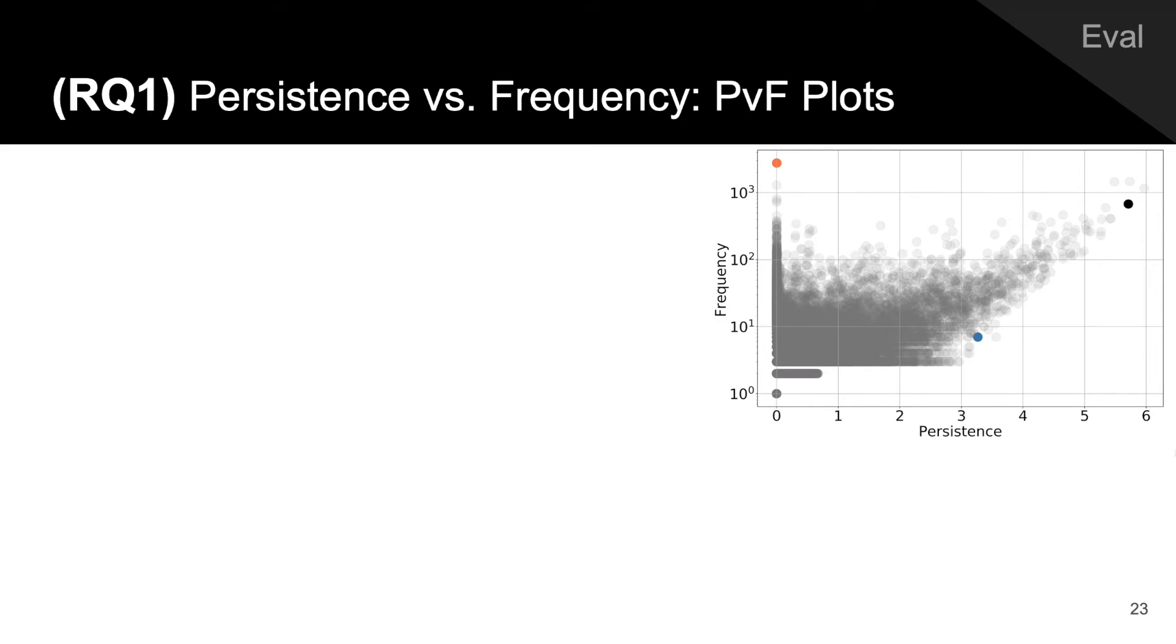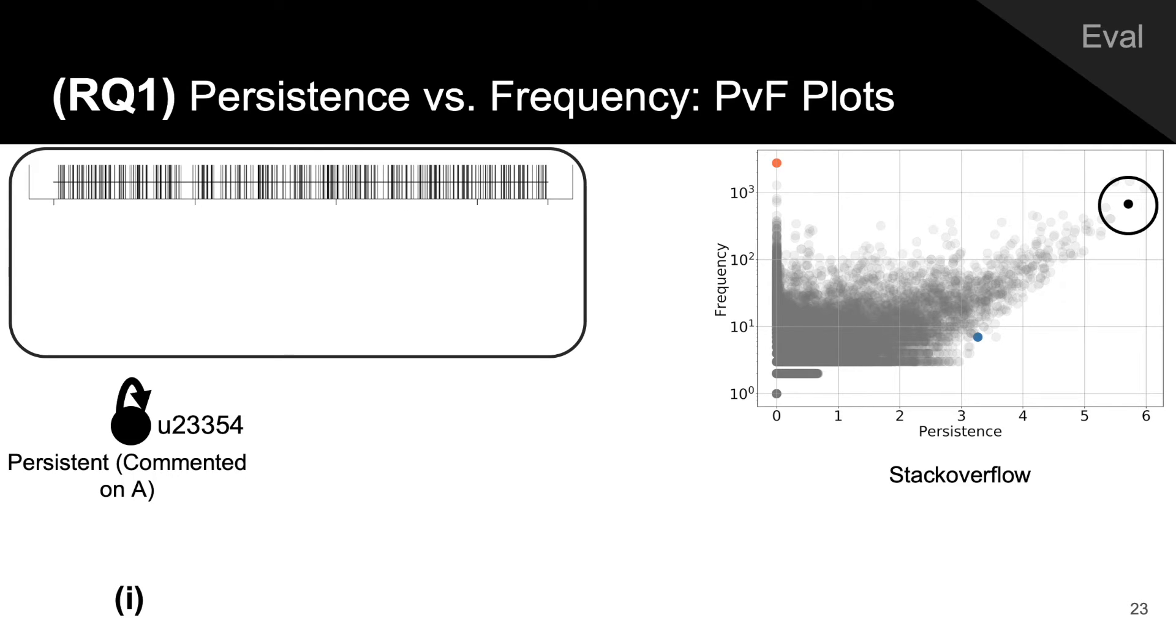The key tool for our analysis is the relationship between frequency and persistence, which we capture in a persistence versus frequency, or PVF plot. For example, in Stack Overflow, which captures users commenting on answers, commenting on questions, and answering questions, persistent activity tends to correspond to users commenting on their own answers.